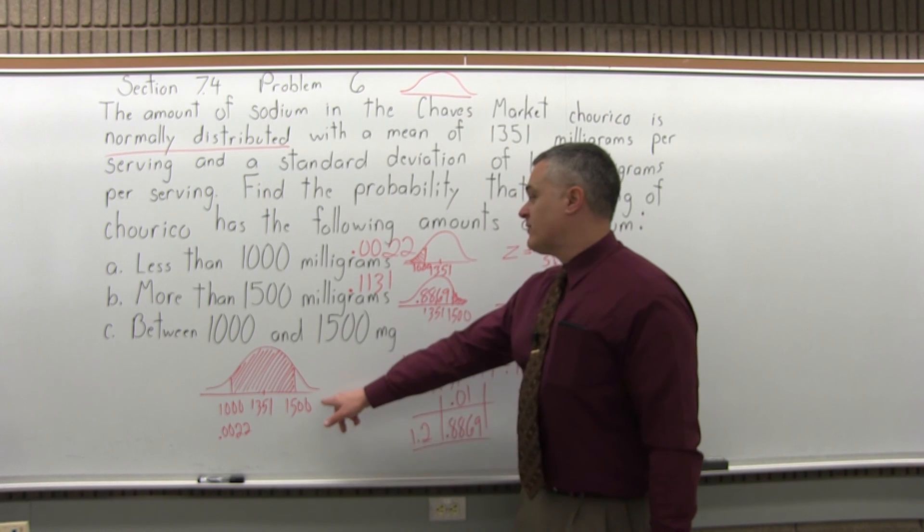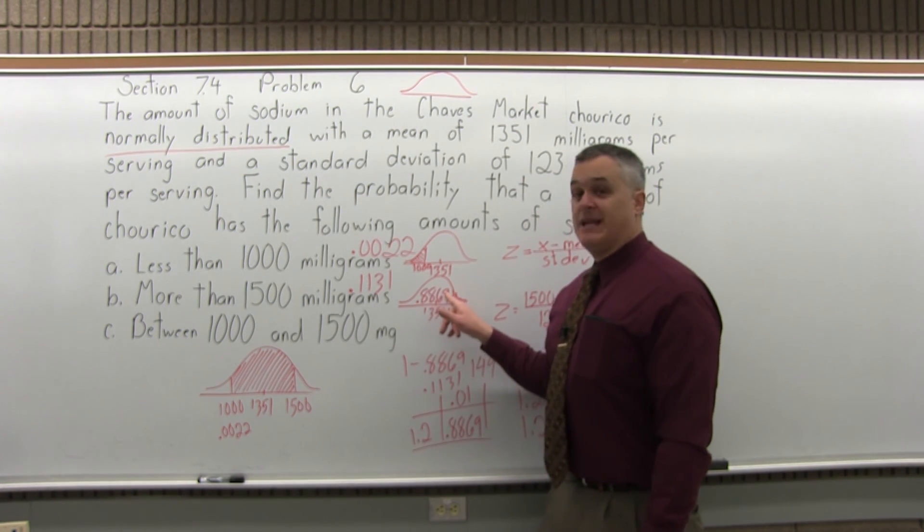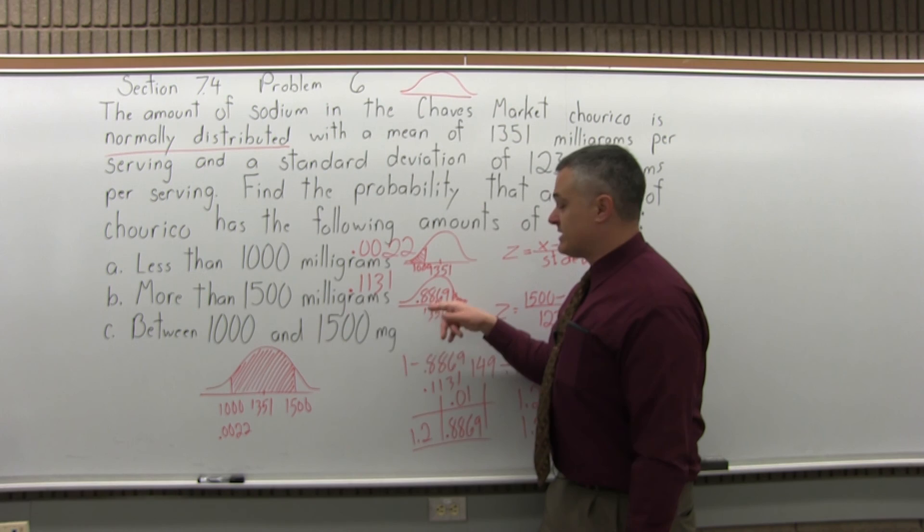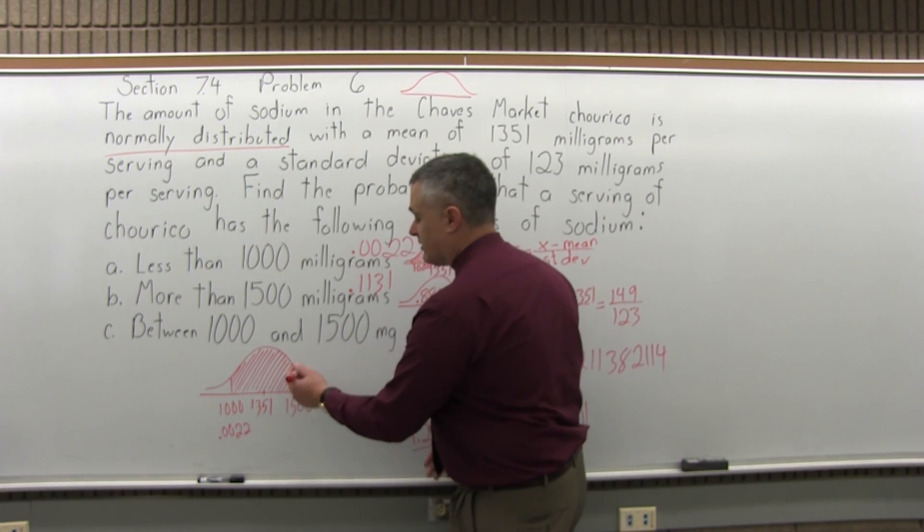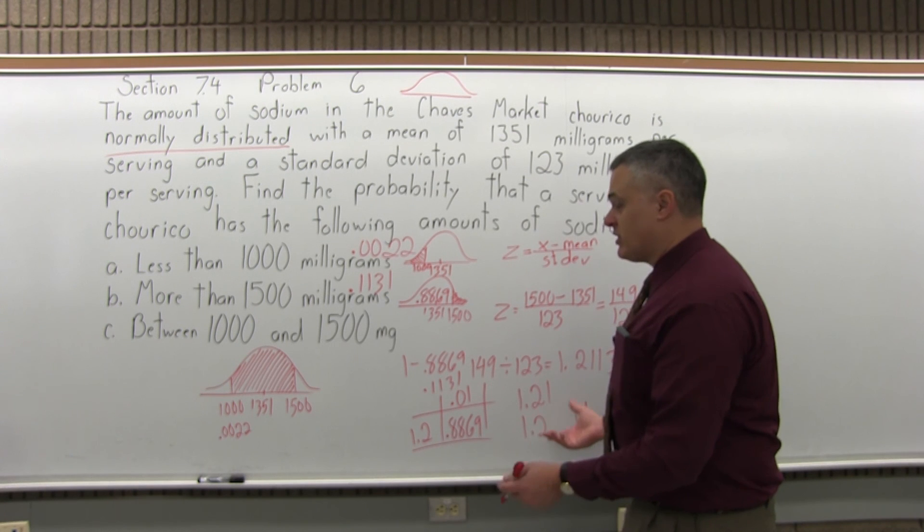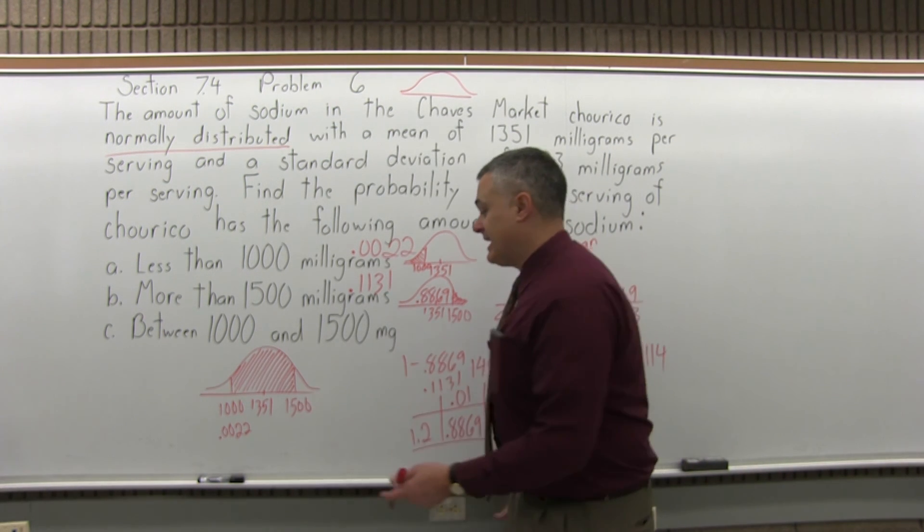And the chart value for 1,500 is .8869. Notice that's not the final answer that we got, but that's what would come out of the chart when you look it up. If you convert the 1,500 to a z-score, get the 1.21, go to the chart, you would get .8869.